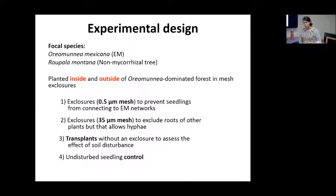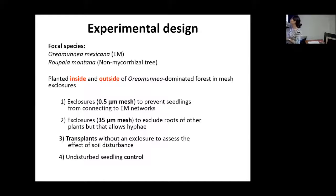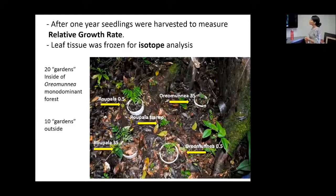When carbon is transferred from one plant to another through fungi, the fungi modify the isotopic signature of that carbon, so we can tell from the carbon signature in the plant whether it is receiving carbon from another plant or only from photosynthesis. We designed this experiment with two Juglandaceae species — Oremunia and Ropala. We chose Ropala because it forms no mycorrhizal associations, serving as a control for transplant effects. We replicated this experiment inside and outside Oremunia forest, with enclosures using very fine mesh to exclude everything from touching the roots, and unrooted seedling controls.